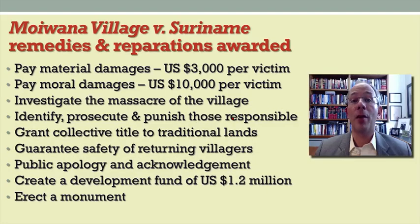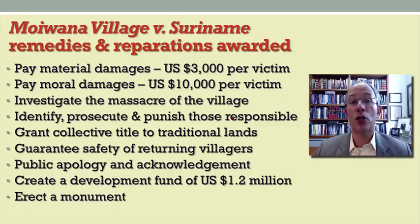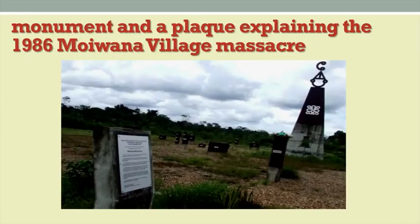Now let's turn to a discussion of some of the remedies in the case. This is a summary of the remedies awarded, which you read about in the excerpt of the Moywana Village judgment. The remedies are really quite expansive. They include not just compensatory and moral damages, but also an obligation to investigate the causes of the massacre and who is responsible, to prosecute and punish those responsible, to give the Moywana Village title to their lands, to permit them to return under conditions that meet their spiritual needs, to provide a public apology and acknowledgement — which the government does in the context of the case itself — to erect a monument, and to create a development fund. Here you see a plaque and a series of sculptures built to commemorate the 1986 massacre of the Moywana Village.